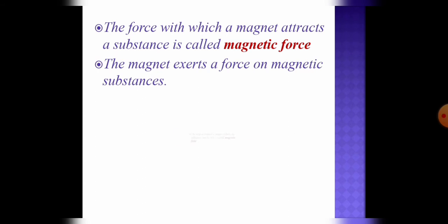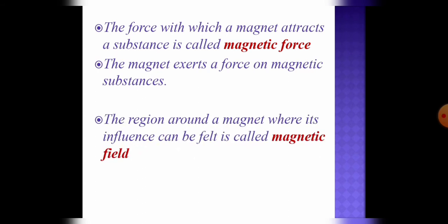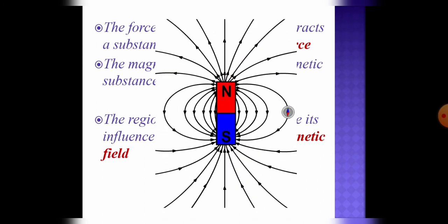Now the region around a magnet where its influence can be felt is called magnetic field. Students, look at this picture. Magnetic field is the area in which a magnet attracts any magnetic material.